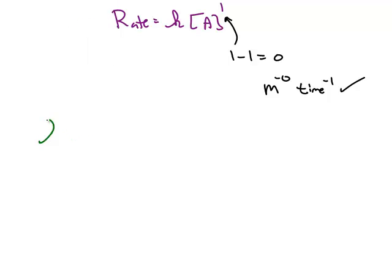Another example, if the rate constant K were 8.7 molarity to the negative 8 seconds to the negative 1. And the question is, what is the overall order of this reaction?